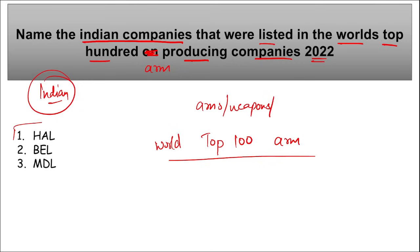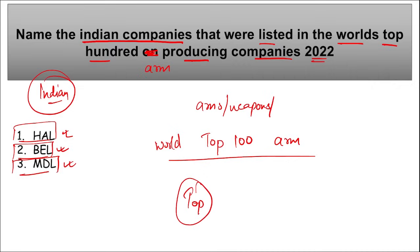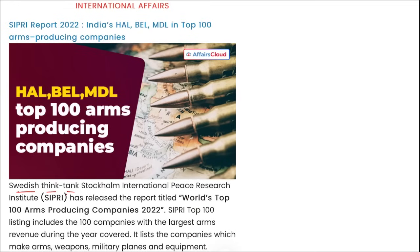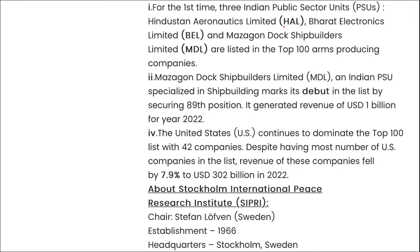India की तीन कंपनी — HAL, BEL, और MDL — listed हैं। यह report SIPRI के द्वारा release की जाती है। SIPRI का headquarter Stockholm, Sweden में है। यह Swedish Think Tank है जिन्होंने release की एक report — World's Top 100 Arm Producing Companies 2022। USA इस list में dominate कर रहा है with 42 companies। Mark करके चलेंगे।